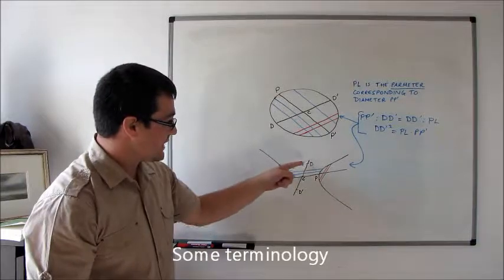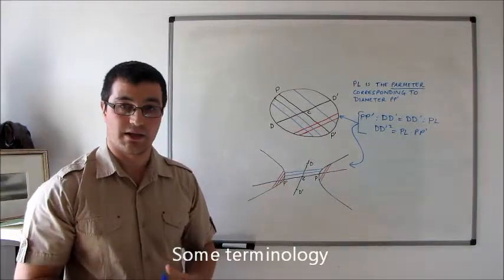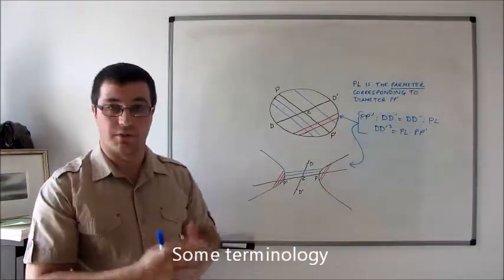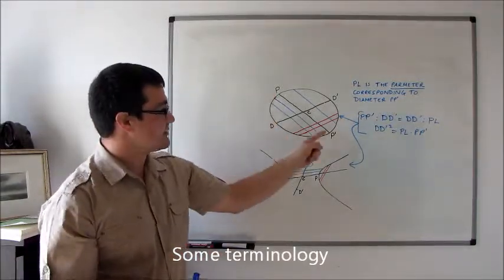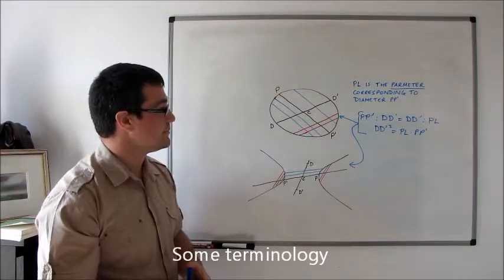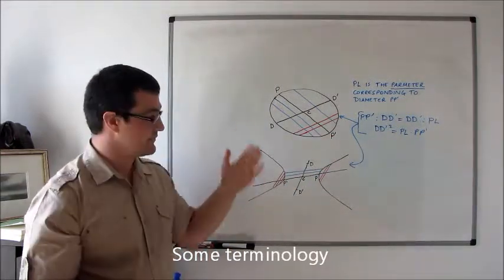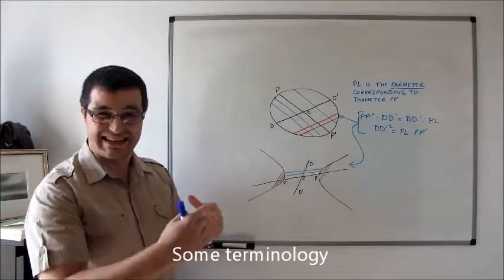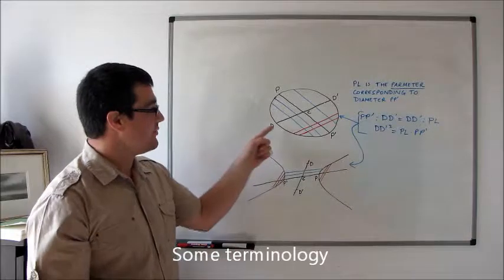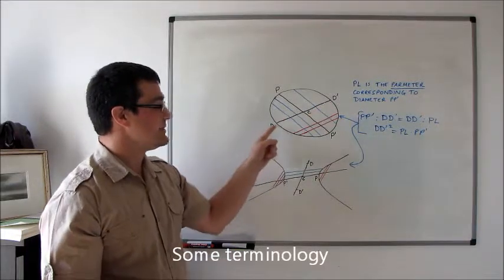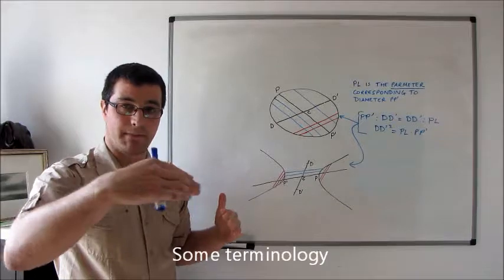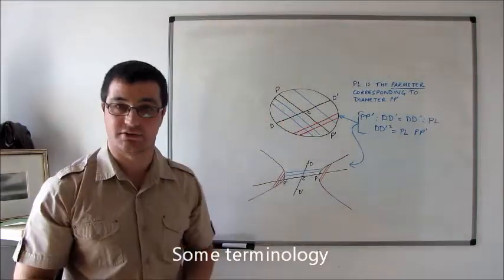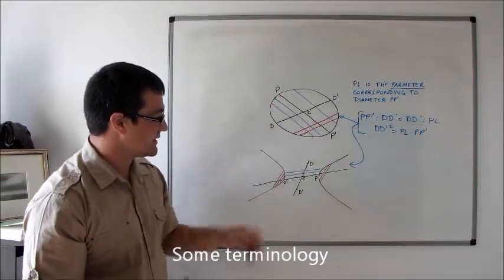So the finite section DD' is a mean proportional between the length of the transverse diameter and the parameter of the section. In the case of the ellipse, the significance of the length DD' is quite obvious: D and D' are the points where the conjugate diameter intersects the ellipse.